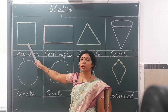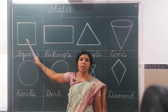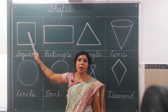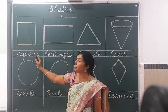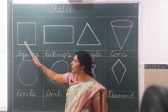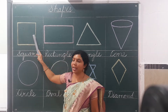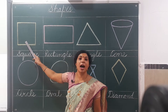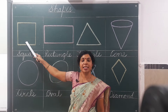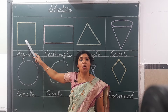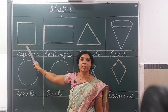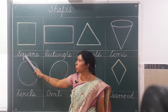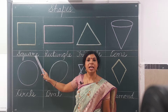First, this is a shape just like a box. If we look very keenly, we can find that there are four sides, and all four sides are equal. So we can say it is a square — S, Q, U, A, R, E — square.